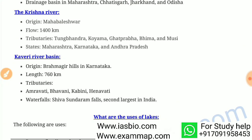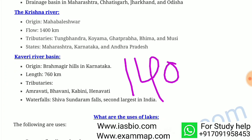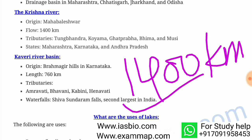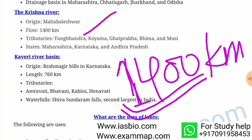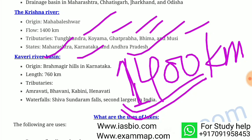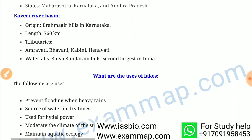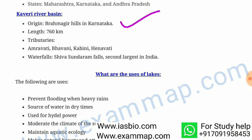The Krishna river originates in Mahabaleshwar and has a length of 1,400 kilometers, making it the second longest east flowing river after Godavari. Its tributaries are Tungabhadra, Koyana, Ghatprabha, Bhima, Musi, and the states covered are Maharashtra, Karnataka, and Andhra Pradesh. The Kaveri basin originates in the Brahmagiri hills in Karnataka with a length of 760 kilometers. Its tributaries are Amravati, Bhavani, Kabini, and Hemavati.